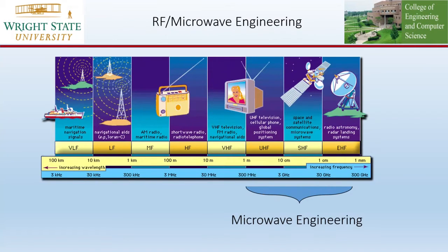So what is RF and microwave engineering? This figure shows the full spectrum of electromagnetic waves. The definition of microwave engineering is any materials, device, components, circuit, or system, as long as they are operated in the frequency range between 300 MHz to 300 GHz — all belongs to microwave engineering.